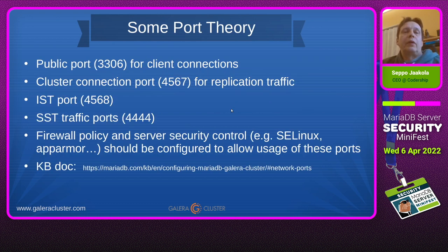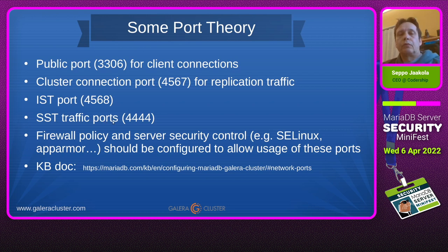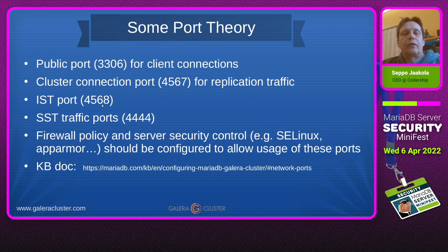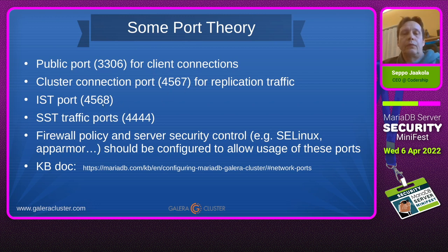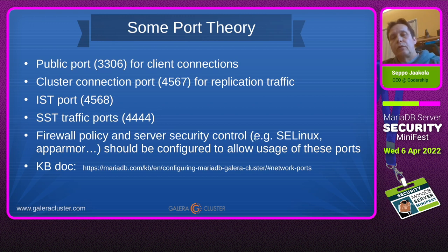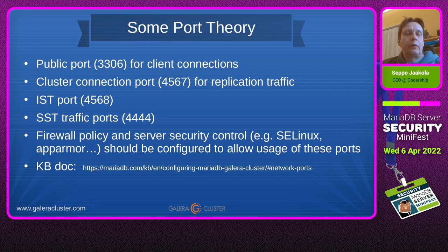About ports: native MariaDB should have only one port open to the public — 3306. When we come to clustering, we have three additional ports: the replication port 4567, the IST (Incremental State Transfer) port 4568 for sending Gcache events, and for SST traffic the default port is 4444. These are all default values and can be configured as you like. Whatever ports you use, you will need these four ports and must configure them for your firewall policies and other server security controls such as SELinux or AppArmor. There is a knowledge base document with more details.